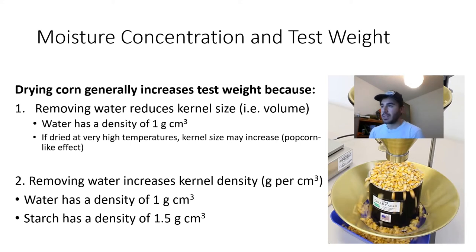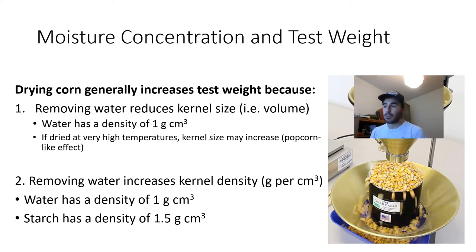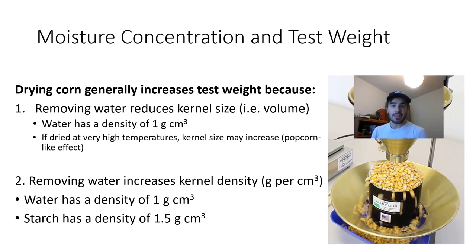The second reason why drying corn increases test weight is because it increases kernel density. While water has a density of one gram per cubic centimeter, starch — which is primarily what a corn kernel is made from — has a density of 1.5 grams per centimeter cubed. This means that as the corn dries, it's losing relatively light water while the heavier, denser starch stays. So overall kernel density, in grams per cubic centimeter, is increasing.